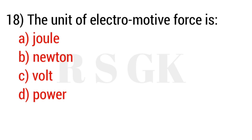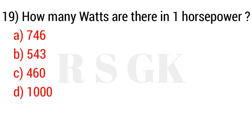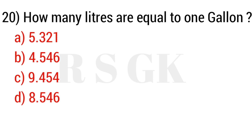Question number eighteen: The unit of electromotive force is — the answer is Option C: volt. Question number nineteen: How many watts are there in one horsepower? The answer is Option A: 746. Question number twenty: How many liters are equal to one gallon?